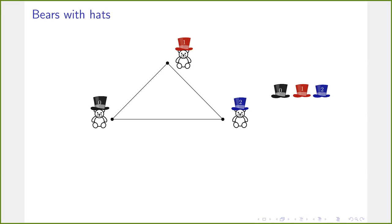Each bear has to guess what color of hat they received. They are not allowed to communicate with each other — they can only pre-arrange a strategy for how their guesses are going to look. Their goal is such that always at least one bear guesses correctly. The bears win if, for any arbitrary assignment of hats, there is always at least one bear that guesses correctly.